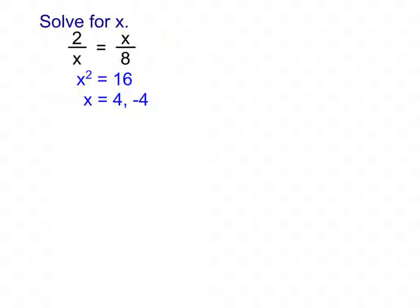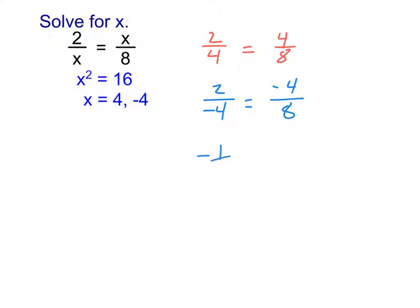We've seen this before — this is a great example of how the stuff from first semester keeps coming back. I'm going to square root both sides to figure out what x is. What do we have to remember when we take the square root of both sides? The plus or minus. So x equals both 4 and negative 4. If I plug positive 4 back in: 2 fourths equals 4 eighths — they both equal a half. If I plug in negative 4: 2 over negative 4 equals negative 4 over 8, which is negative 1 half on both sides. There are multiple x's, and multiple ways to get there.